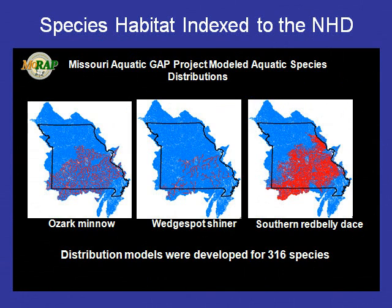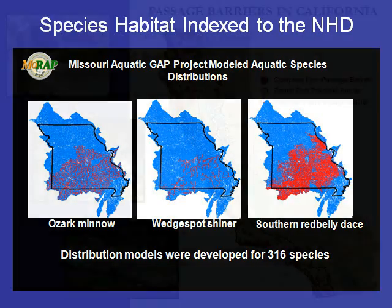In Missouri, 316 different fish species have been indexed and referenced to the NHD. So we know, for example, where the Ozark Minnow, the Wedge Spot Shiner, and the Southern Red Belly Dace live — shown in red on the map — telling us which streams in Missouri these species inhabit.